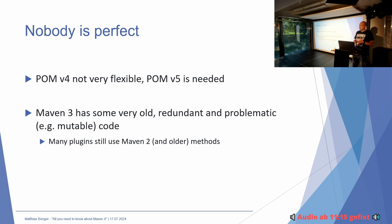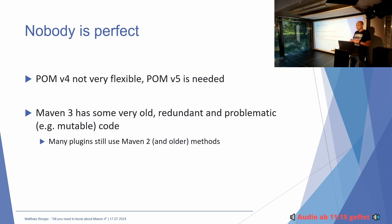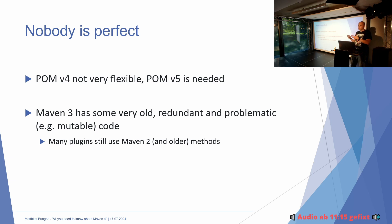Das zweite Problem an Maven 3 ist, dass der Code abwärtskompatibel ist - die ganzen APIs sind abwärtskompatibel, im Prinzip alle auch zu Maven 2. Dadurch ist da halt viel Java 7-und-vorher-Code drin. In den letzten Jahren ist es schon ein bisschen Richtung Java 8 gegangen, aber es gibt auch Legacy-Code aus den verschiedenen Plugins. Teilweise aber auch schlechte APIs, sodass man über eine API, die man in seinem Plugin benutzt, Statusänderungen in den Core-Komponenten vornehmen kann, die eigentlich gar nicht gewollt sind - ähnlich wie Java das mit internen Packages und Klassen vor Jigsaw hatte.